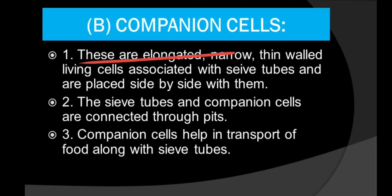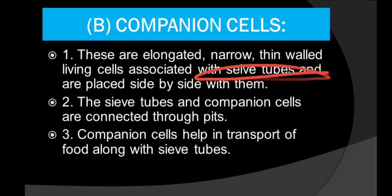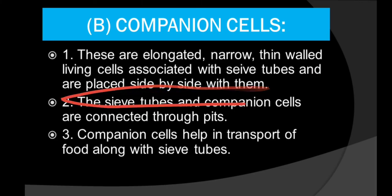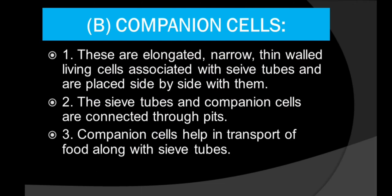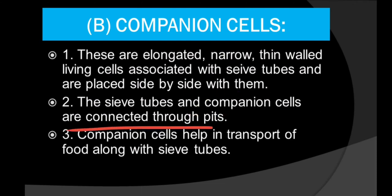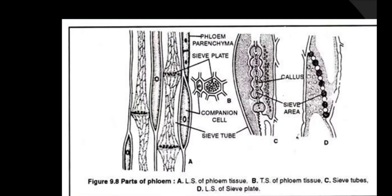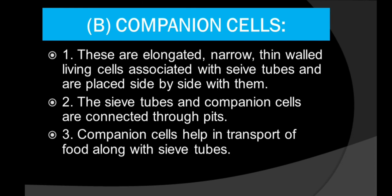Companion cells are elongated, narrow, thin-walled living cells associated with the sieve tubes, placed side by side with them. The sieve tube and the companion cells are connected through pits, and they help in the transport of food along with the sieve tubes.